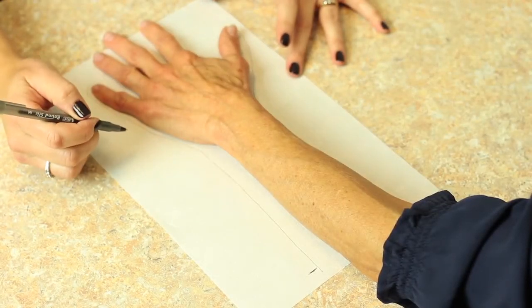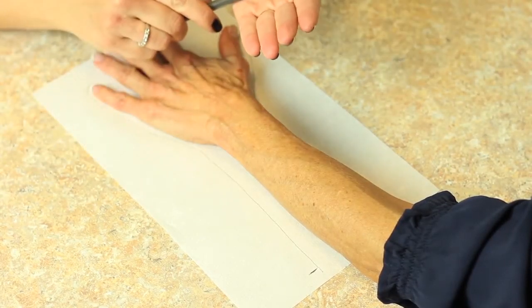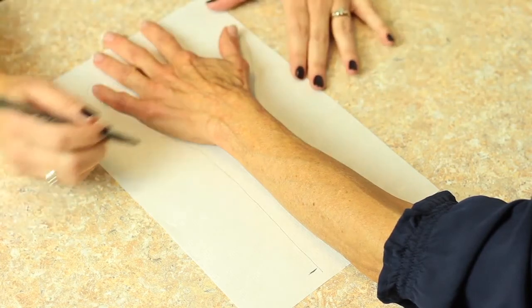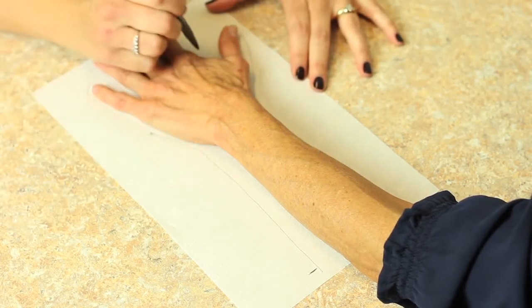Distally in the hand we want the orthosis to end just at the distal palmar crease to allow full MCP range of motion. So I'm going to mark for the second and the fifth MCP.